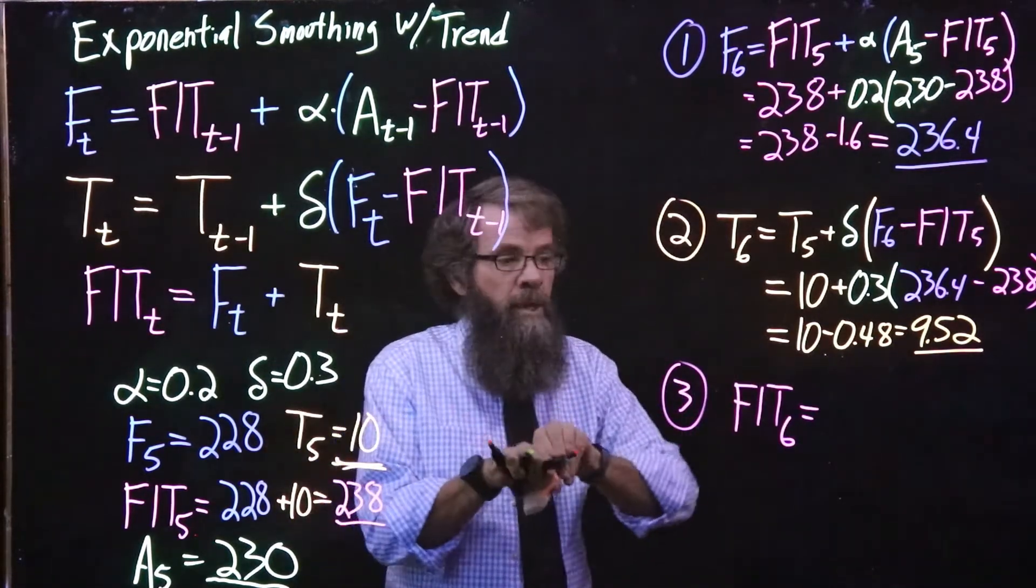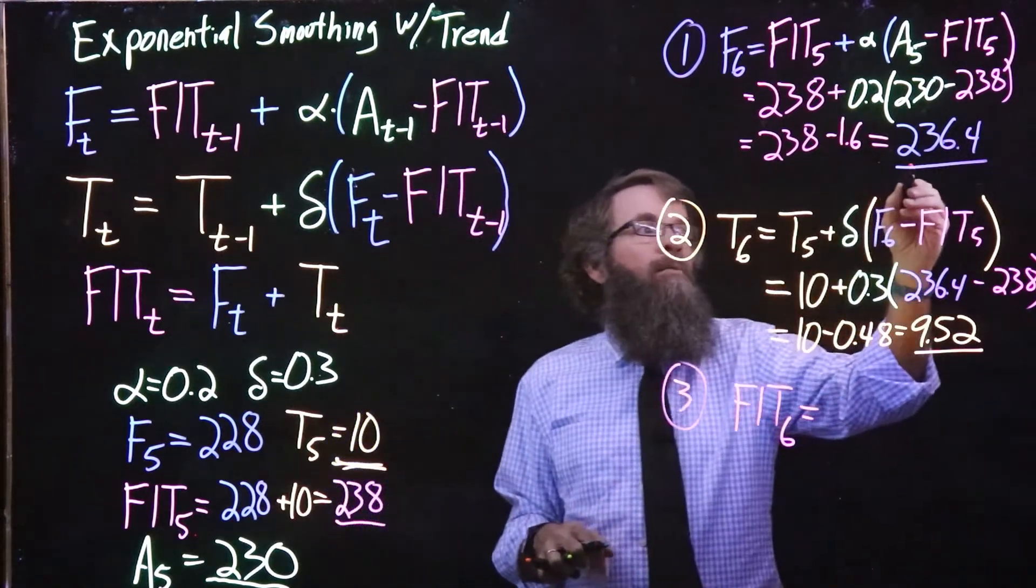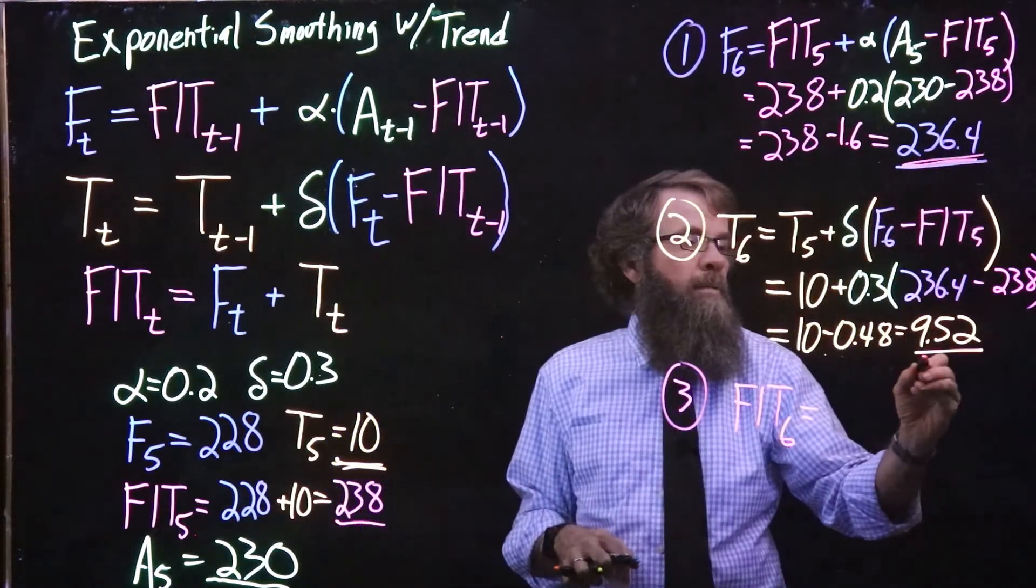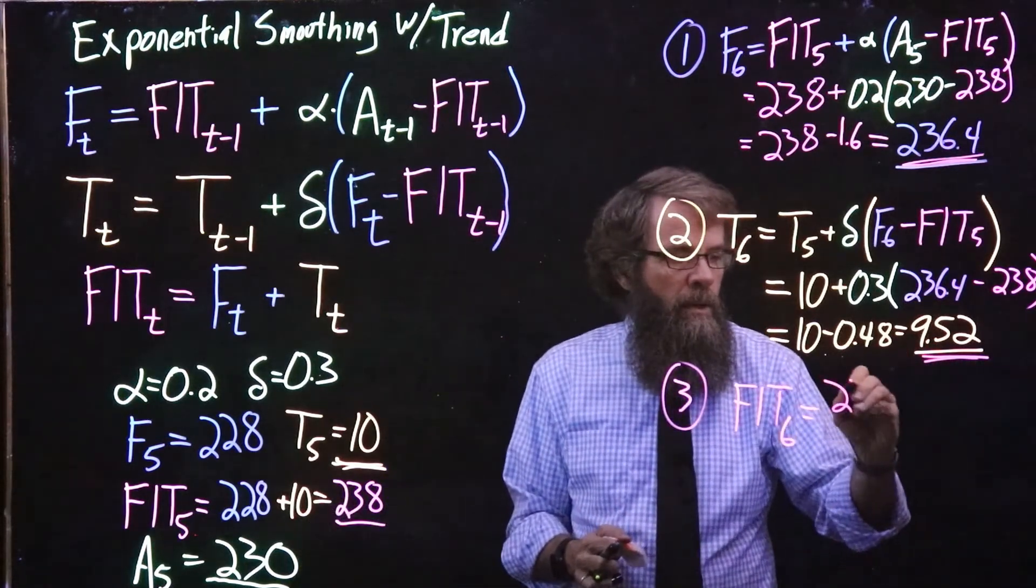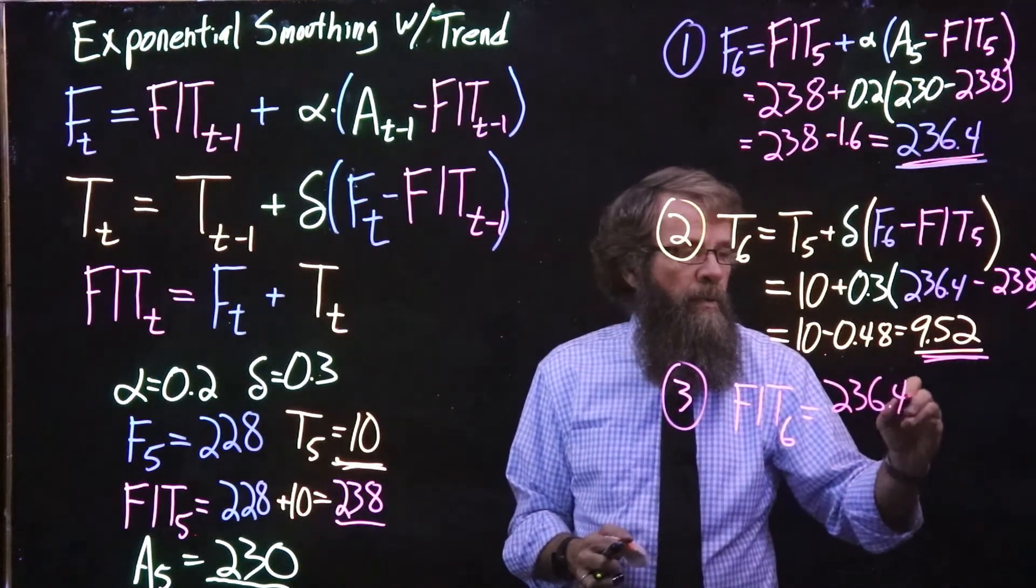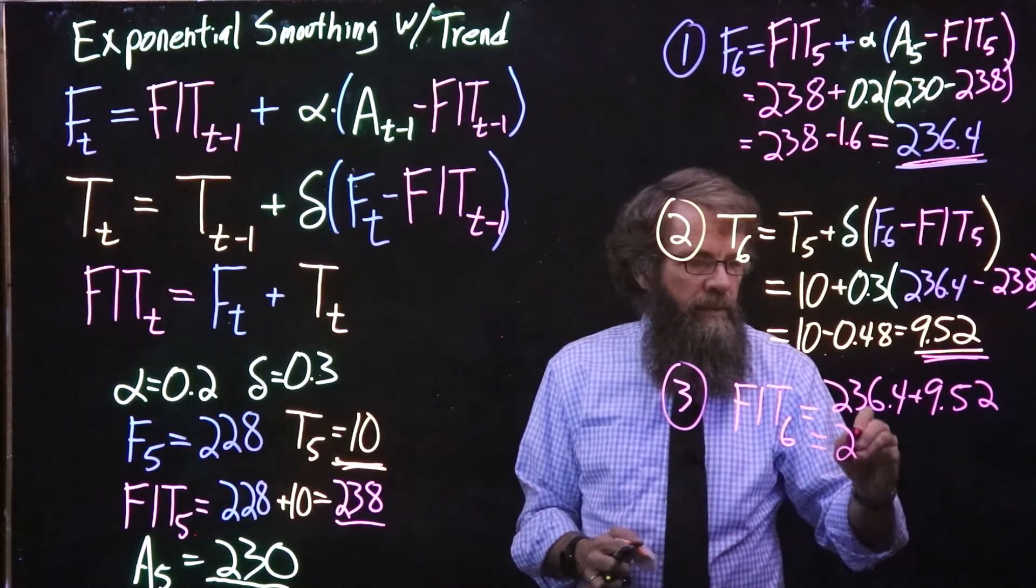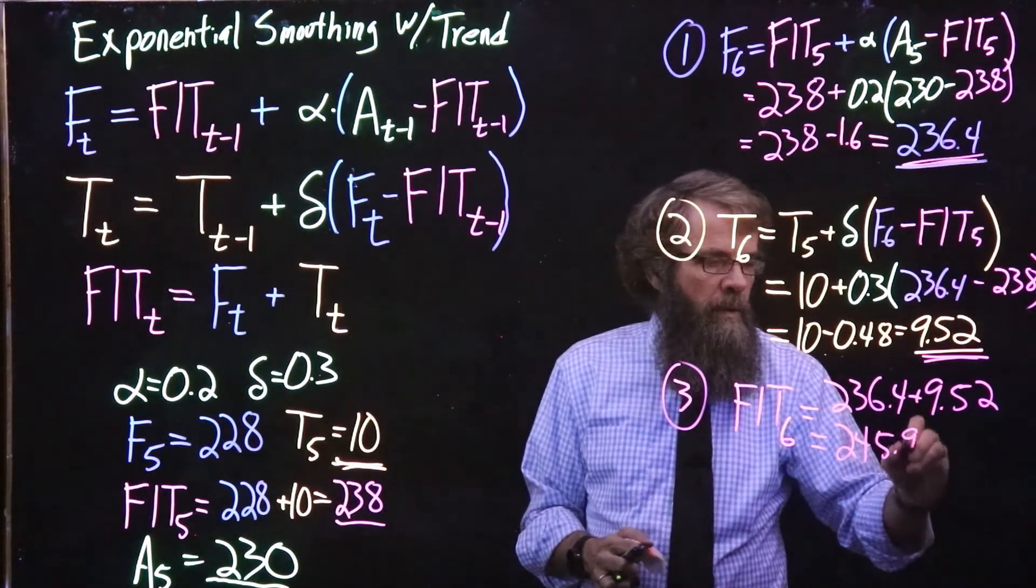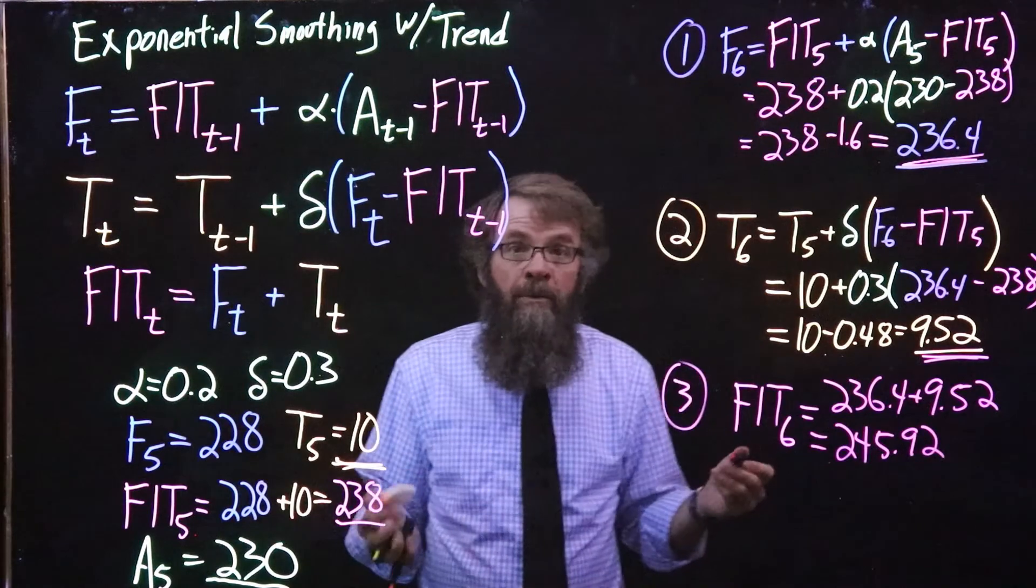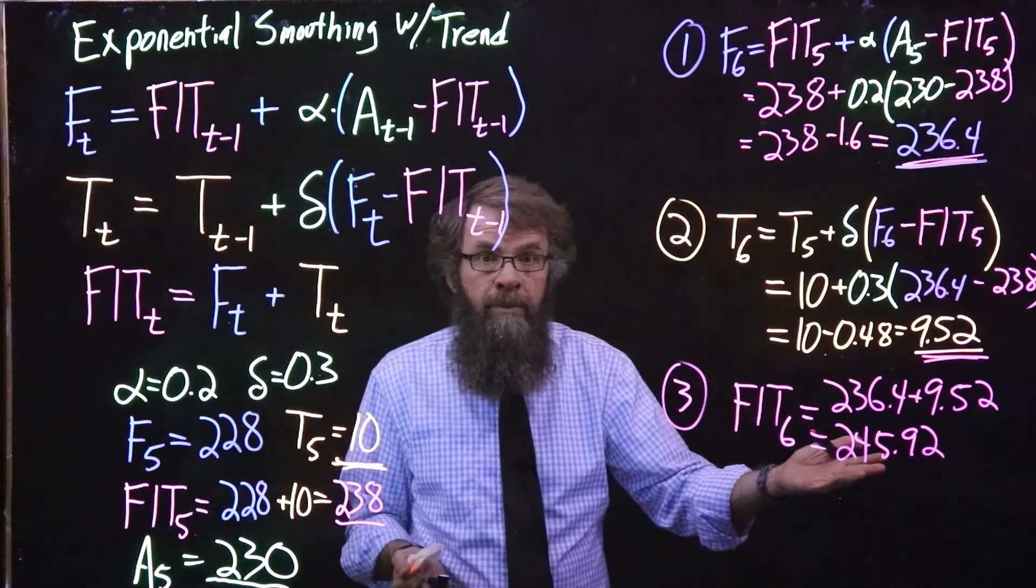Alright, we're in the home stretch. So to get our new forecast including the trend, we're going to take our most recent level and we're going to take our most recent trend and add those two together. So 236.4 plus 9.52 gives us 245.92, and now if you want to know what's going to happen in period 7, it's simple, just add on another period's worth of growth.